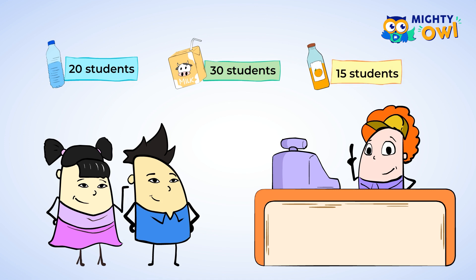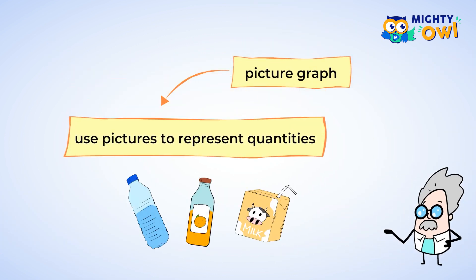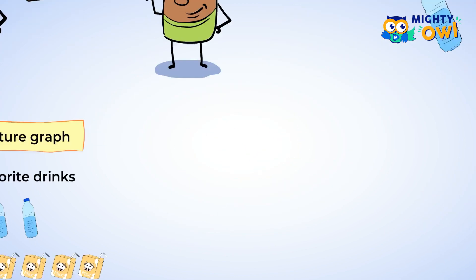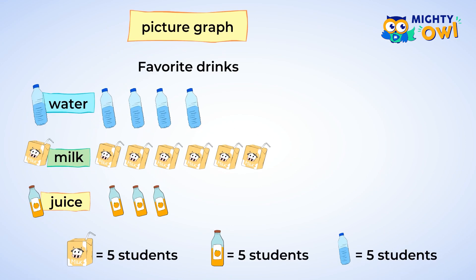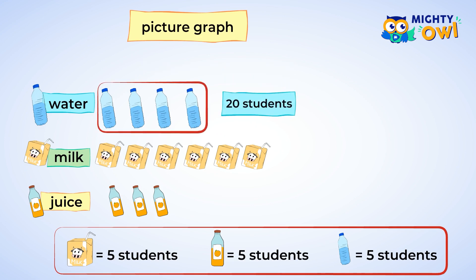This information can be shown in two different ways. One is called a picture graph. Picture graphs use pictures to represent quantities, or how many objects there are. This graph helps us visualize the drink order. Notice that there is a key showing you that each drink container is equal to 5 drinks. Since 20 students like to drink water, there are 4 bottles of water to represent that.